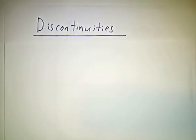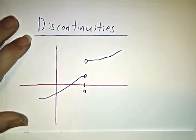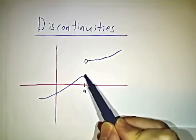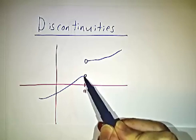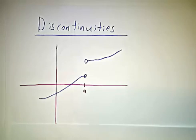There are three main types of discontinuities that can occur for a function. The first one is where you have a limit from the left, and it's a perfectly good finite number, and a limit from the right, and it's a perfectly good finite number, and they don't agree.